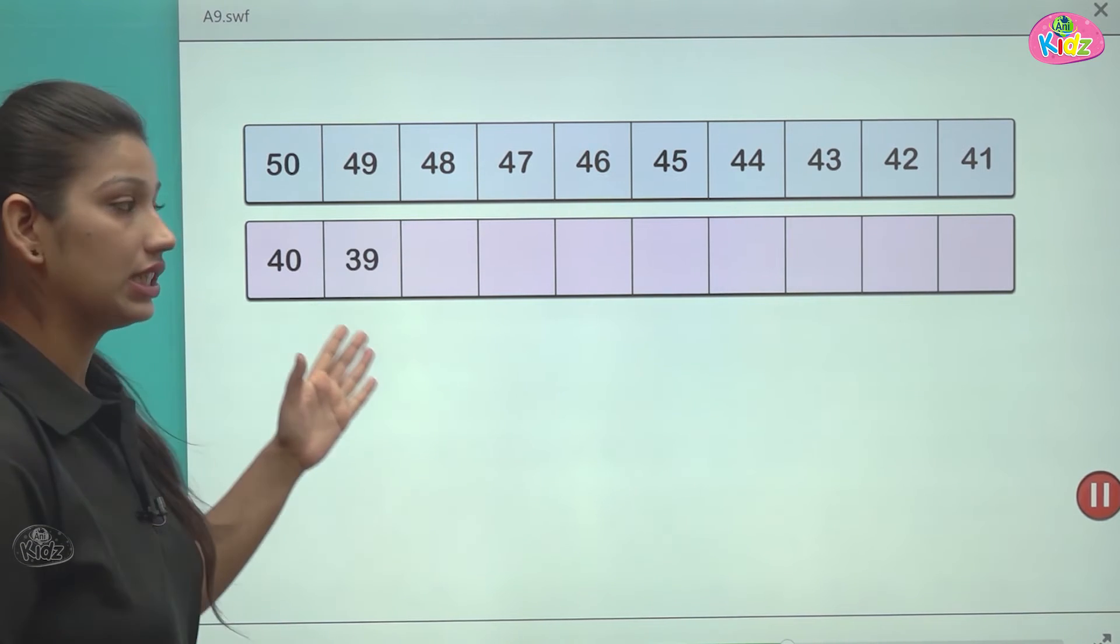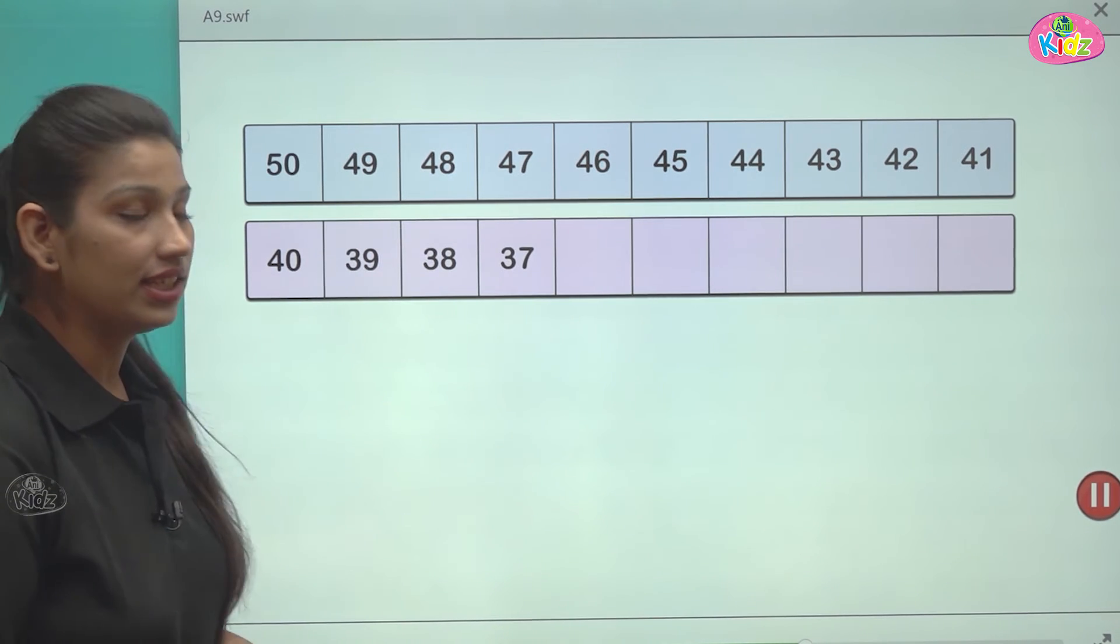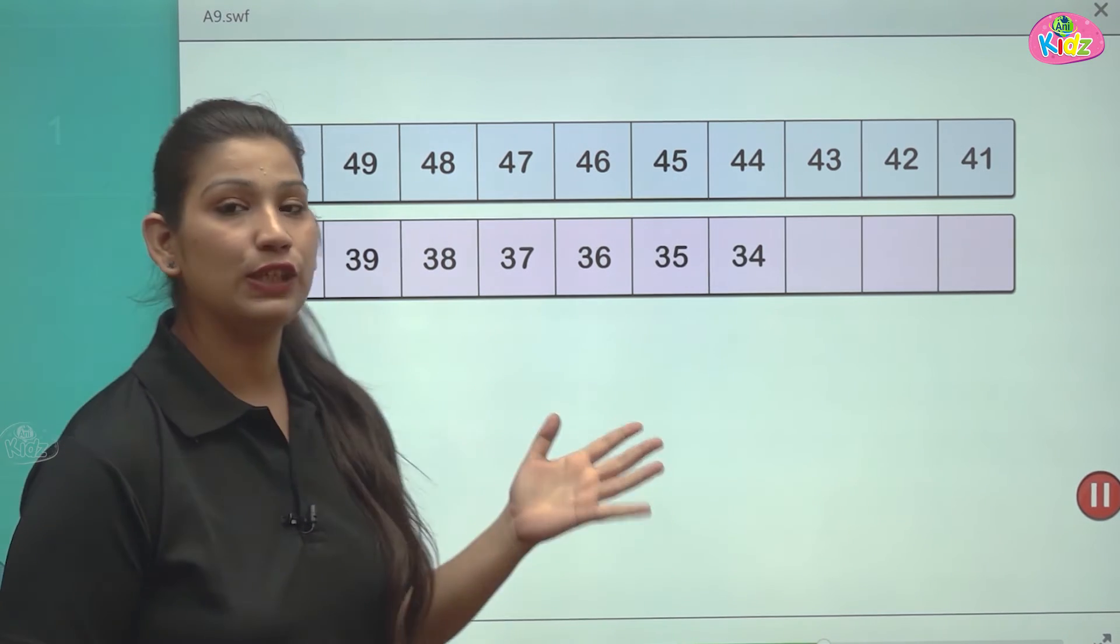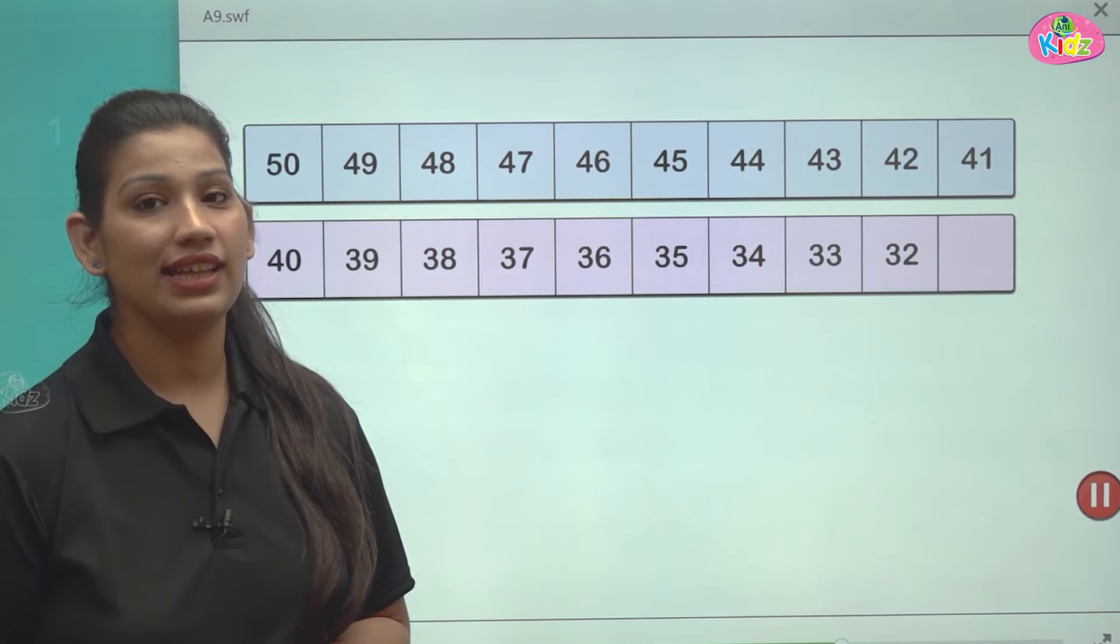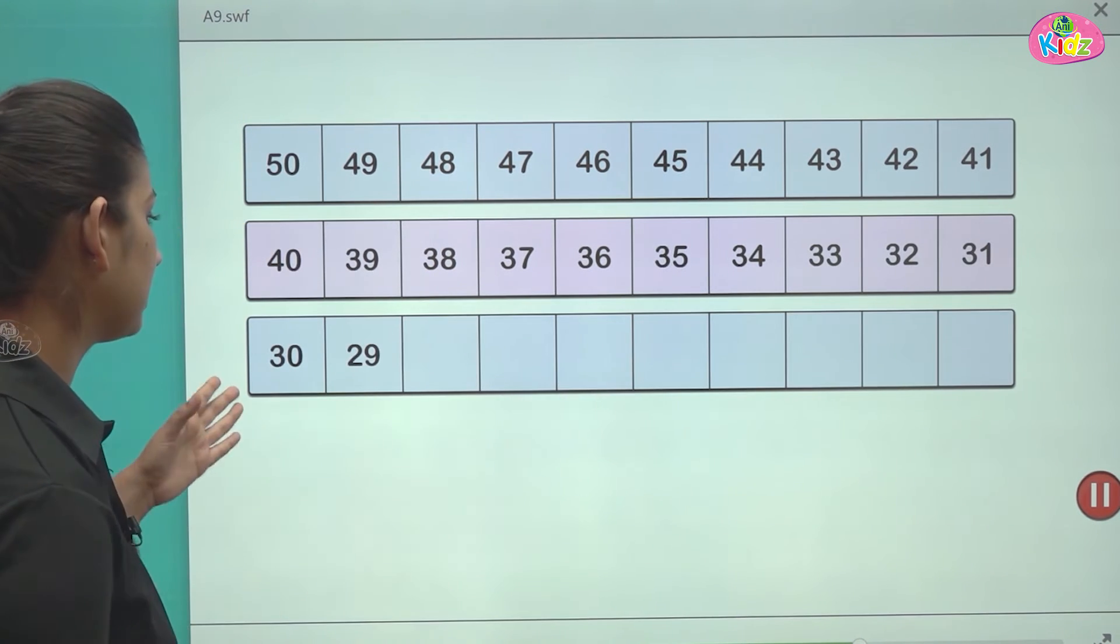40 then 39, 38, 37, 36, 35, 34, 33, 32 and 31. This is number 31.